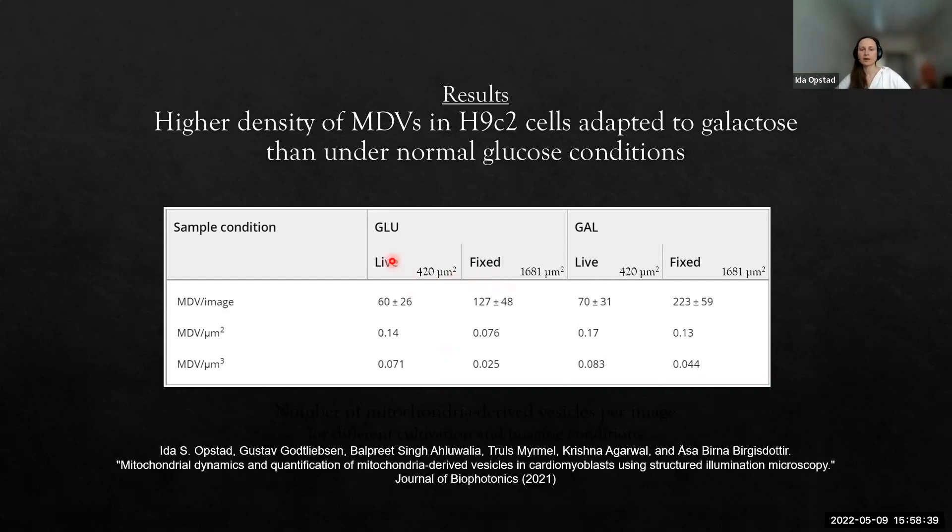Both for live and fixed conditions, we found a significantly higher number of vesicles. For the live images, we have fewer vesicles because we have smaller imaging areas because we needed to go fast to have good images. The result was 60 versus 70 vesicles for galactose and glucose. For the fixed condition, we had 127 on average versus 223 for galactose condition.